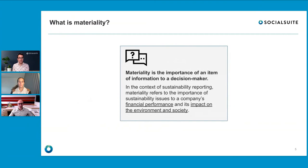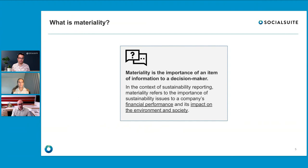Materiality is really about the importance of an item of information to your decision making — how relevant is it, and at what point does it cross a threshold where an organization declares it material. In the context of sustainability reporting, it often refers to the financial performance of a company — looking at risks and opportunities — but also the flip side: how is this company impacting the world at large, including environment, society, and people.